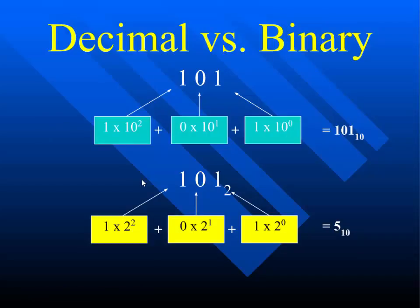Here's an example of two numbers that use the same three digits. You have 101 in base 10 on top, and 101 in base 2 on the bottom — I'm showing the differences between those two number systems. In base 10 we're used to place value: the first column on the right is the ones column, the second is the tens, the third is the hundreds. You can think of those as 10 to the zero, 10 to the first, and 10 squared.